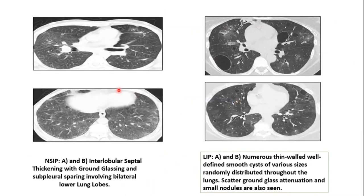Next is non-specific interstitial lung disease. On HRCT, there will be various combinations of ground glass opacity, consolidation, reticular opacity, and traction bronchopathy. Honeycombing may be present but it is very rare. One of the classical features is subpleural sparing of changes within the lung parenchyma. In this set of images showing NSIP, we can see interlobular septal thickening with ground glass opacity and subpleural sparing involving bilateral lower lung lobes.